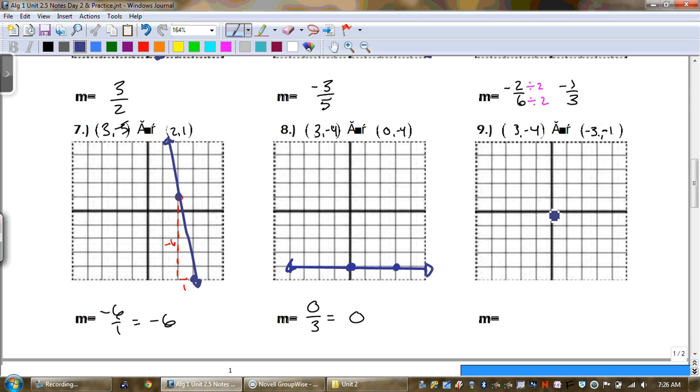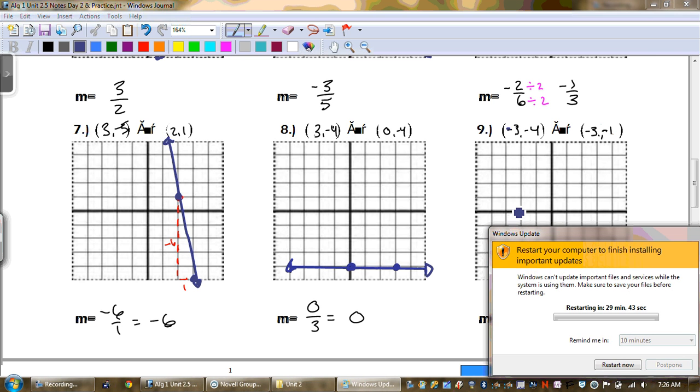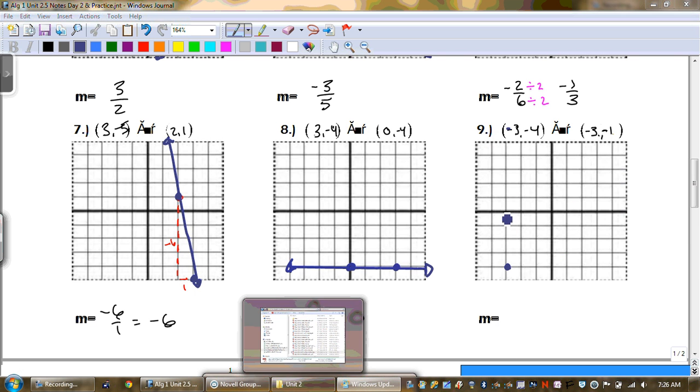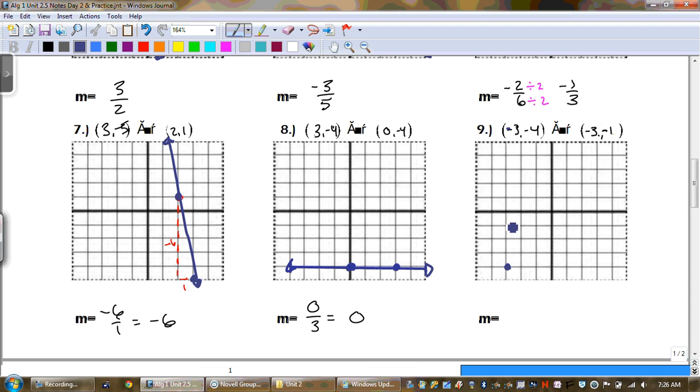That should be negative 3, negative 4, and then negative 3, negative 1. Draw your line. Make sure it goes the entire length, don't make it a baby graph. That's a vertical line, guys. Right away, vertical line, you should be like, dude, that's undefined slope.